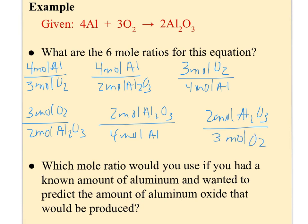If I want to know how much aluminum I need compared to how much aluminum oxide I'm going to produce, that would be a four to two ratio — I'd be doubling my amount. But if I want to know how much aluminum oxide I'm going to produce compared to how much aluminum I start with, that would be the opposite — I'd be cutting it in half. There's a big difference between doubling your amount and cutting it in half.